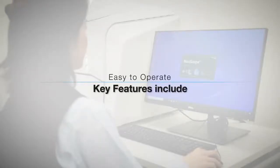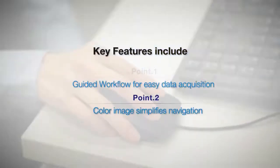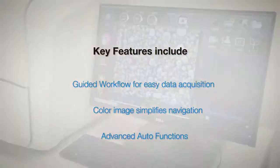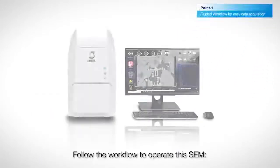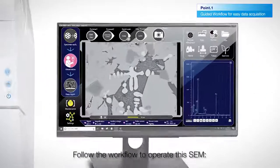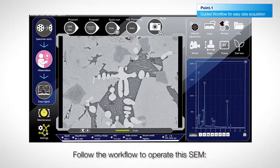The JCM-7000 is characterized by its ease of use. Here are three features that even beginners will love to operate this SEM. Follow the workflow shown on the left side of the screen.